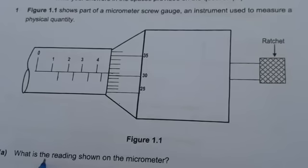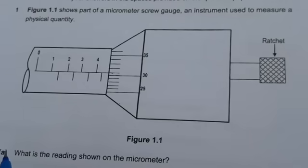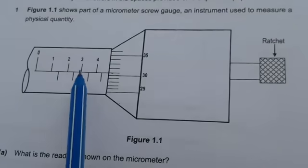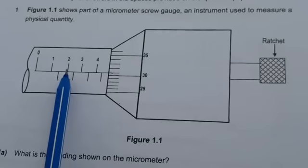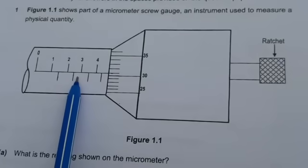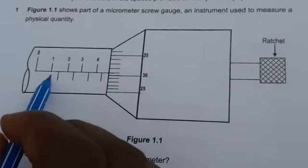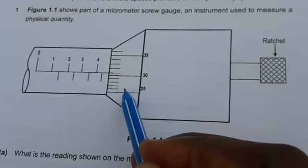Part A asks what is the reading shown on the micrometer. For you to read the micrometer, you are supposed to understand two scales. A micrometer has two scales. This scale here is called the sleeve scale, and this is the thimble scale.